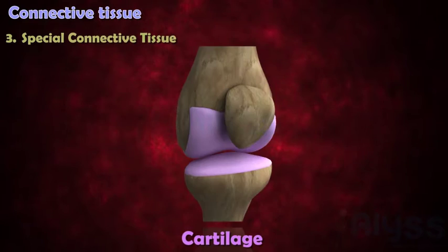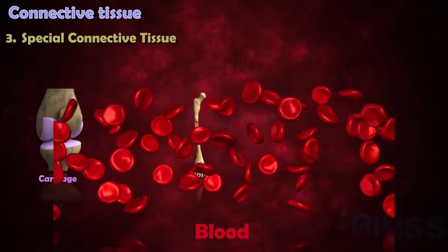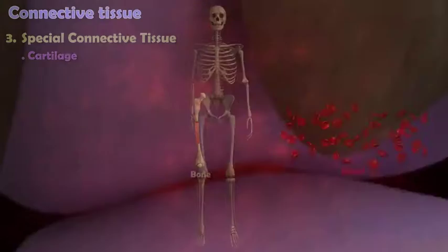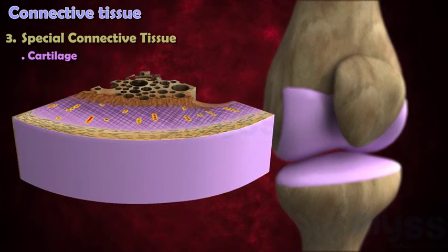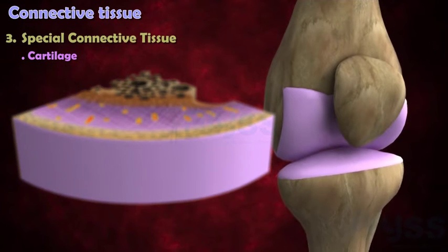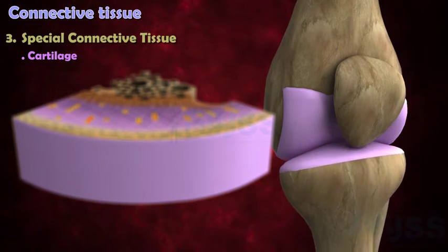The third category includes special connective tissue, like cartilage, bone, and blood. Cartilage: the cells of cartilage are embedded in a protein-containing matrix. It contains collagen and elastic fibers and is strong but flexible.